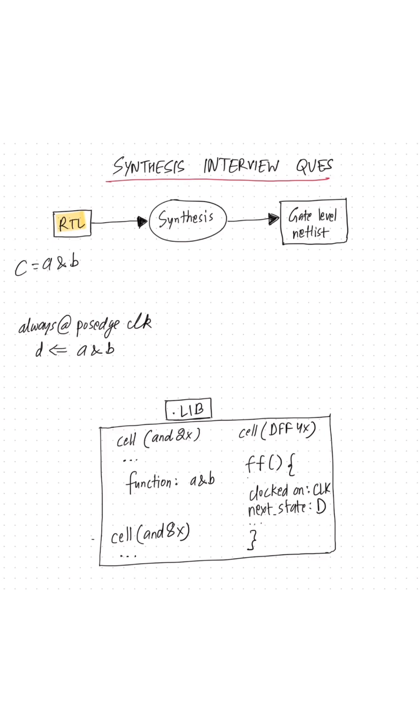So let's say in the RTL, we have a statement like this where A and B is being assigned to C, or another statement like this where at the positive edge of clock, A and B gets assigned to D.